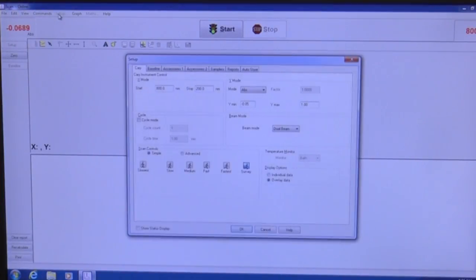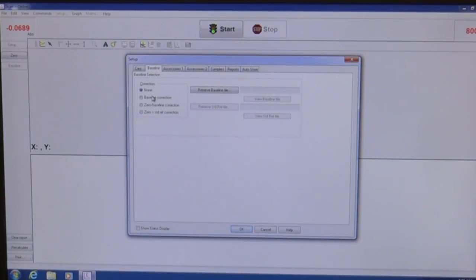Go over to the setup tab and confirm that you're going from 800 nanometers to 400 nanometers so that we'll only be looking at the visible spectrum. You may also want to change from survey to fastest. That tends to give a better spectrum.